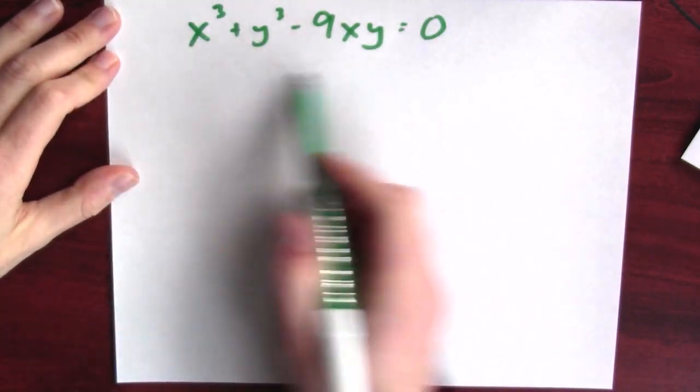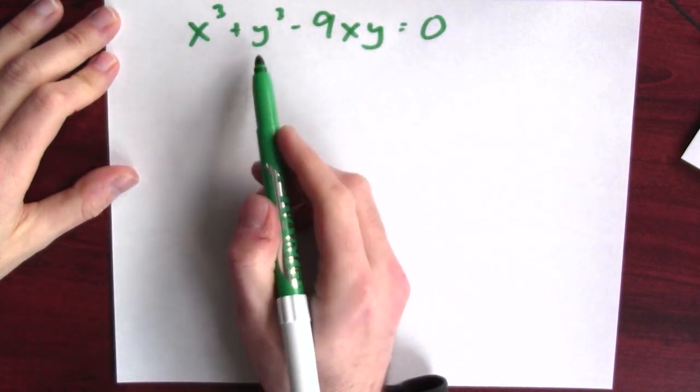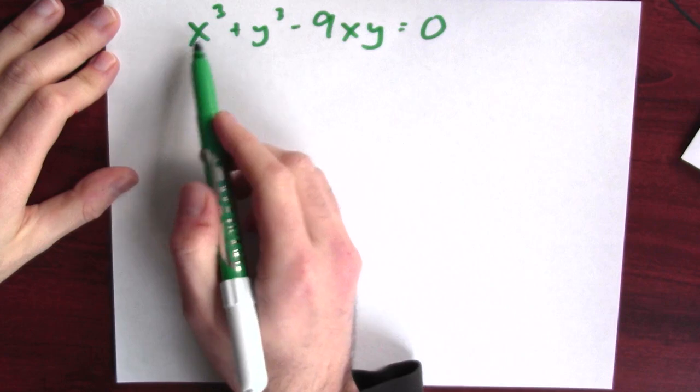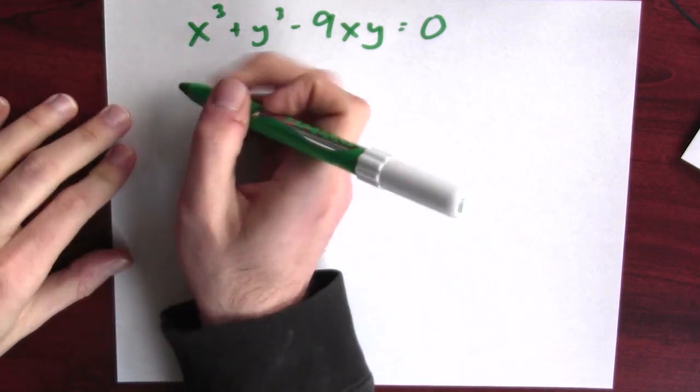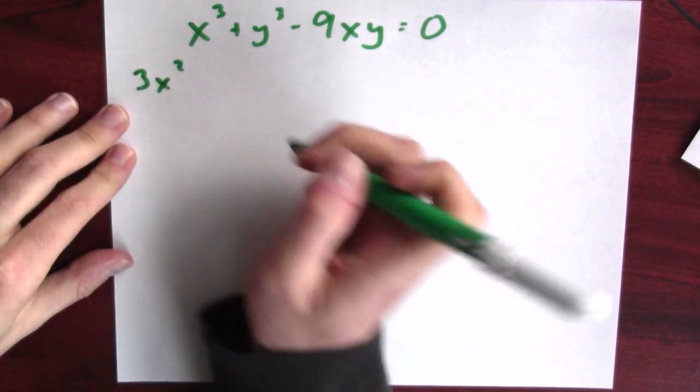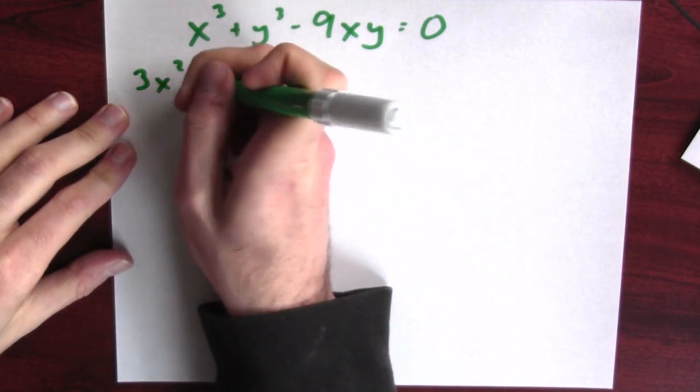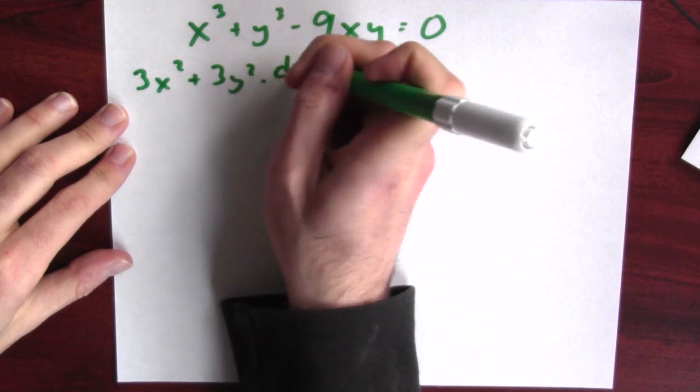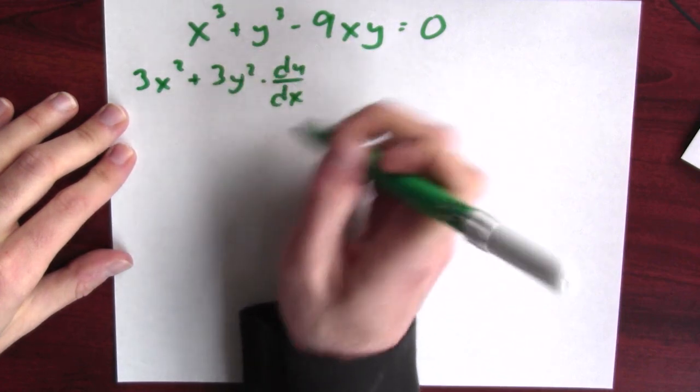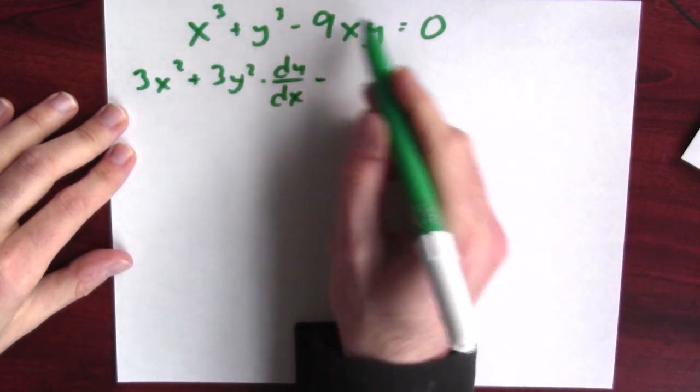So let's use implicit differentiation on this, thinking of y secretly as a function of x. So the derivative of x cubed is 3x squared. The derivative of y cubed, well, that's 3y squared times dy dx. That's really the chain rule in action.